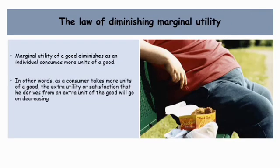This takes us to another subtopic: the law of diminishing marginal utility. The marginal utility of a good diminishes as an individual consumes more and more units of a good. In other words, as a consumer takes more units of a good, the extra utility or satisfaction derived from each extra unit will continue to decrease.